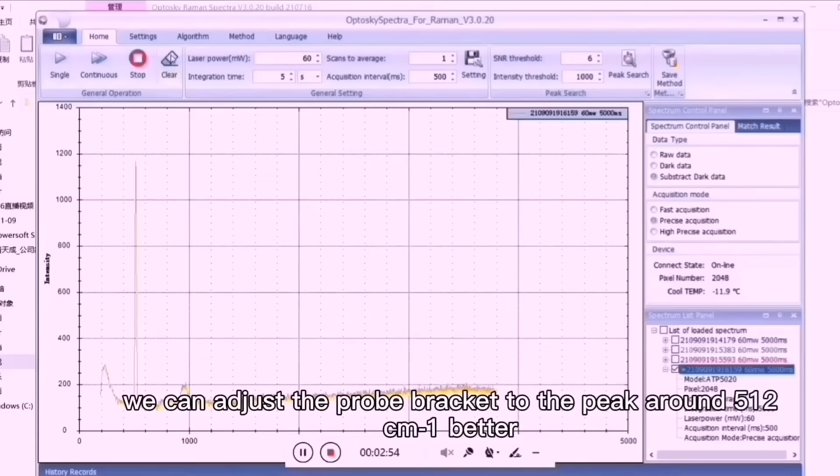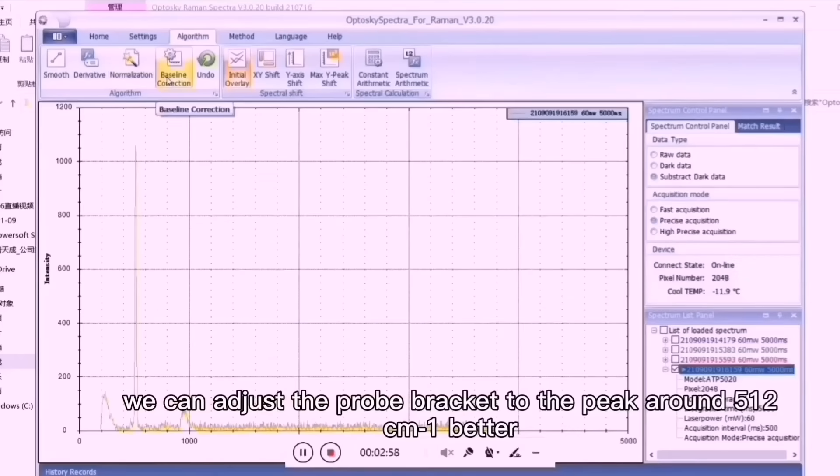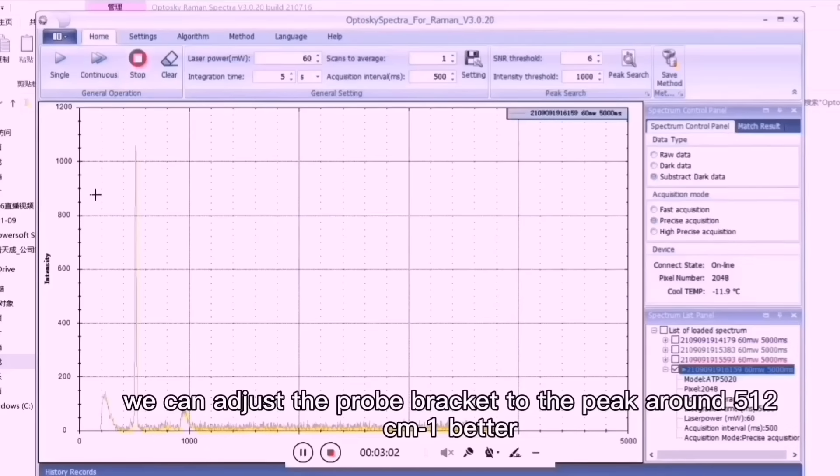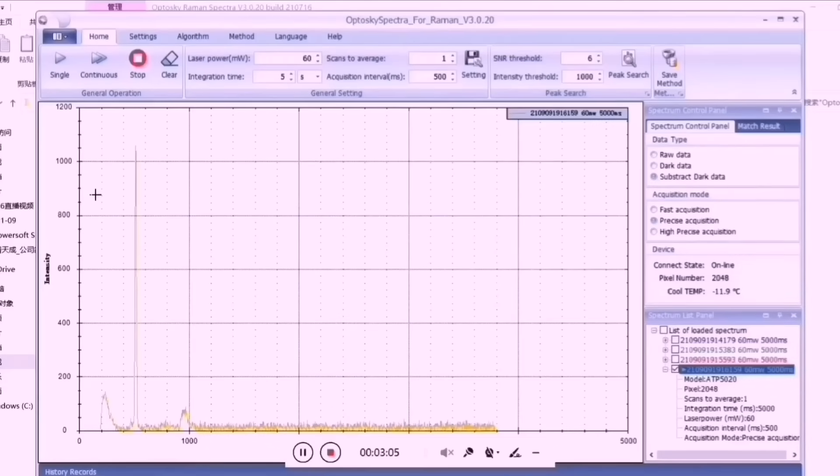We can adjust the probe bracket to align the peak around 512 wave number. The probe is fixed on the fiber level.